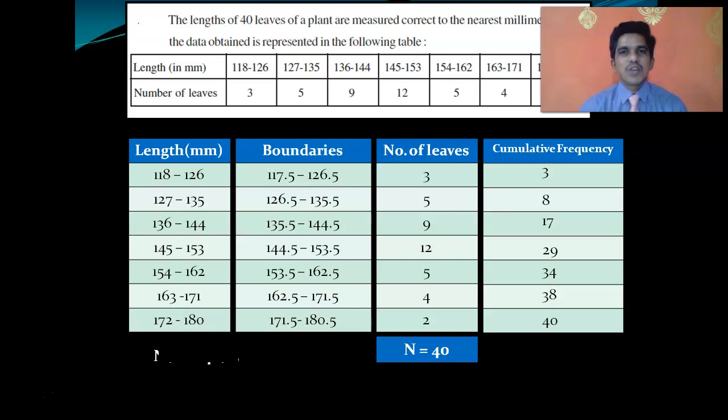Now we'll identify the median class. The median is at half of the observations. Calculate N by 2. Here 40 by 2 equals 20. The first class has 3 values, second class 8 values, third class 17 values. The fourth class has 17 to 29 values. The median is the 20th observation, so the 20th value is in this class.